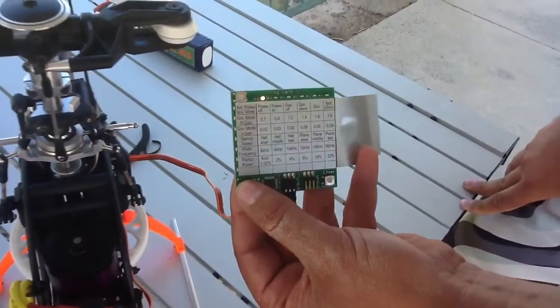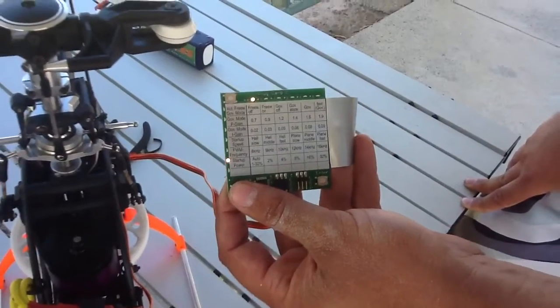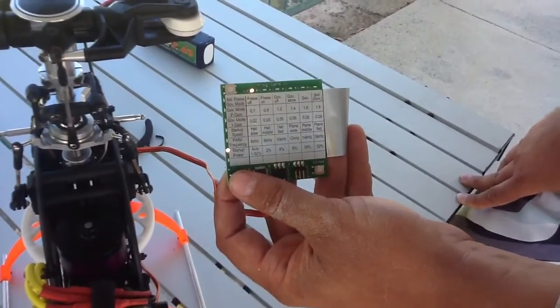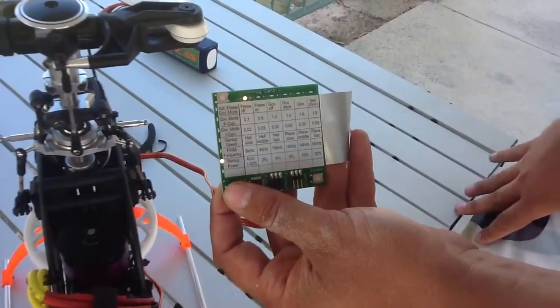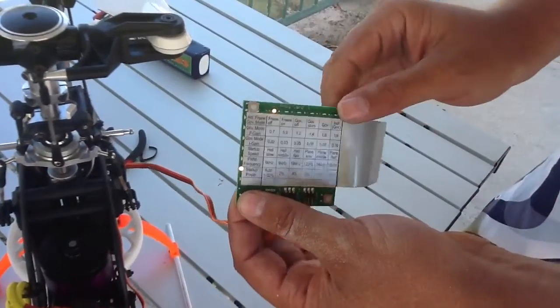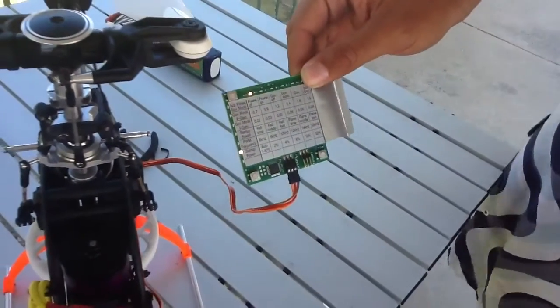On some motors, you might have to change this down to 2, 4, 8, 16, or 32%, depending on how hard the soft start comes on.